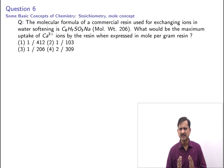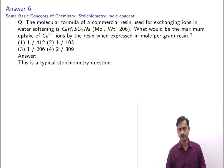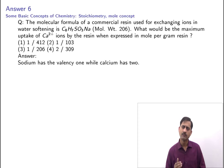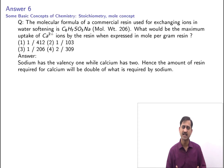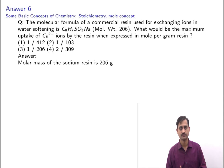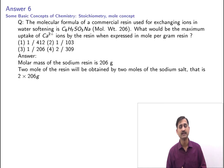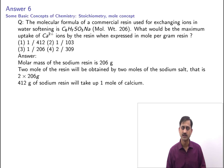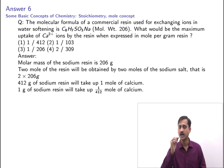Sodium has valency 1 while calcium has valency 2, so the amount of resin required for calcium will be double that required by sodium. The molar mass of sodium resin is 206 g. Two moles of resin, i.e., 2 × 206 = 412 grams of sodium resin, will take up 1 mole of calcium. Therefore 1 gram of sodium resin will take up 1/412 mole of calcium.